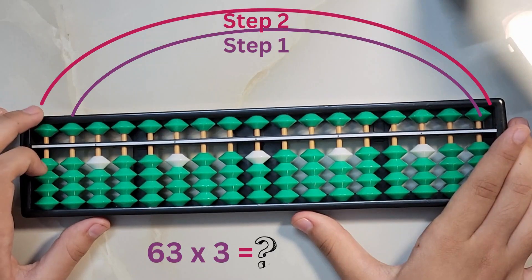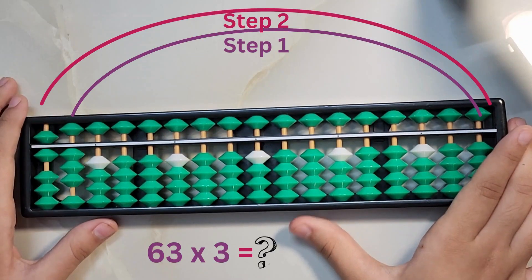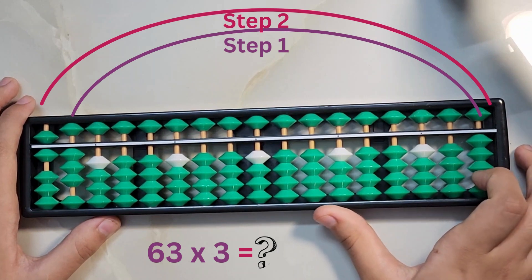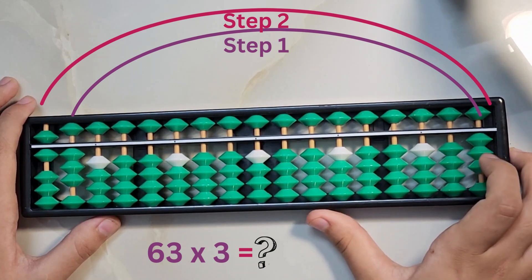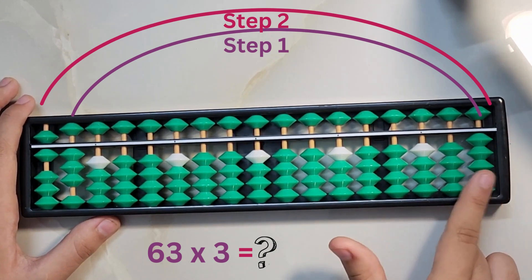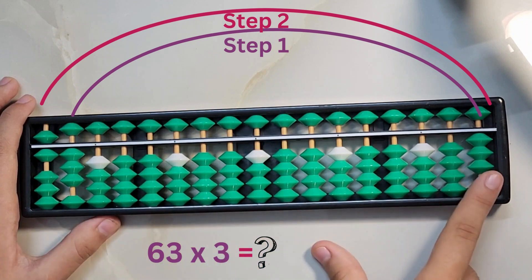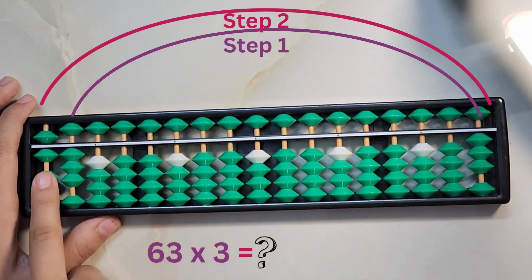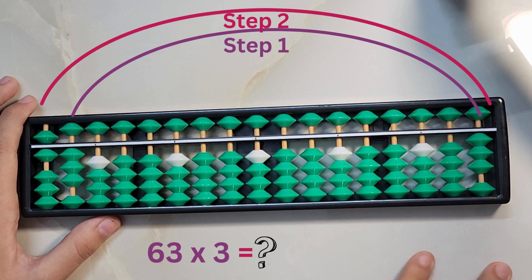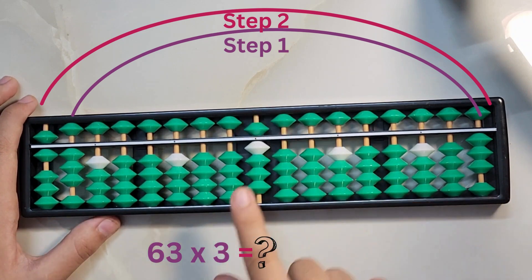63 multiplied by 3. Step 1 is to multiply 3 with 3, and step 2 is to multiply 3 with 6. Let's do step 1: 3 times 3 is 9. We will make 9 in the middle on the 1's place.